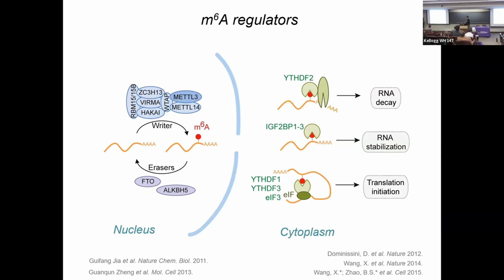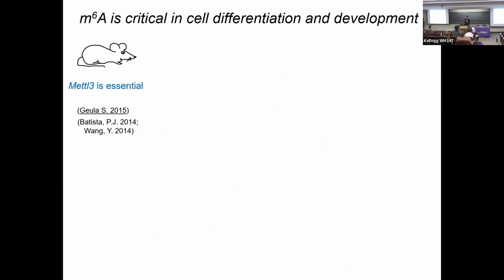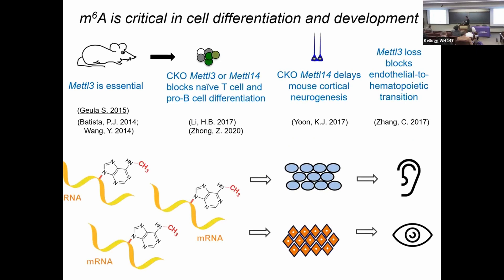We and others spent almost 10 years mapping out the detailed pathways by which this modification affects post-transcriptional regulation. Reader proteins recognize methylated messenger RNA and affect their decay; some stabilize transcripts while others mediate translation regulation. RNA methylation is essential to most cell differentiation and development. Knocking out the methyl transferase in embryonic stem cells blocks differentiation — the mouse dies at an early embryo stage. This holds across many systems: pro-T cells, naive T cells, pro-B cells, neurogenesis — methylation is critical to cell differentiation.